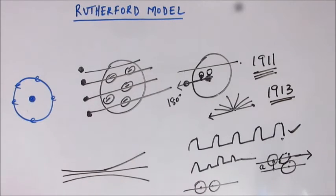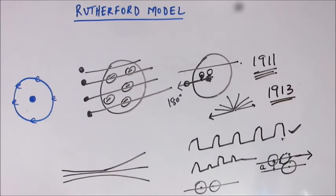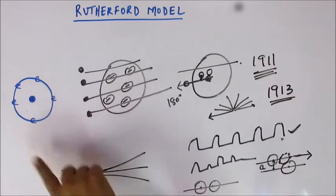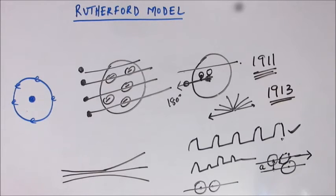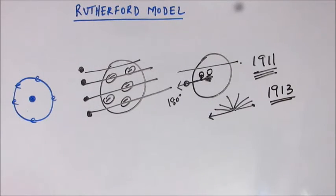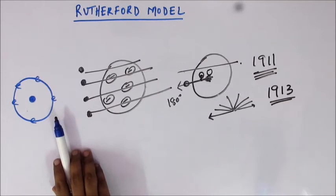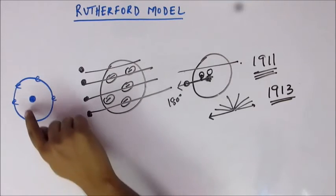The electron is moving in circular motion. Whenever a particle moves in a curved path, the direction of its velocity changes, so even if the speed remains constant, the velocity changes, meaning there is acceleration. So the electron moving in a circular path has acceleration — in Maxwell's terminology, the electron is accelerated. Therefore these electrons must emit energy and cannot violate Maxwell's rule. If they emit energy, the electron's orbit will start shrinking and ultimately the electron will move into the nucleus, making the system unstable.